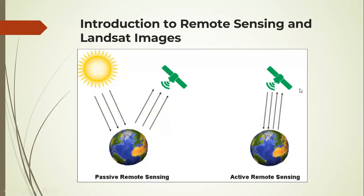We have active remote sensing where the satellite itself produces the electromagnetic energy or the radiation. It is targeted to the earth and then the sensor will record whatever is reflected.